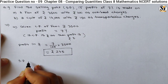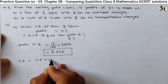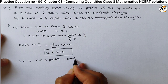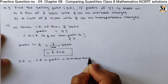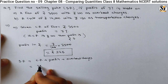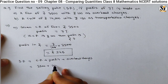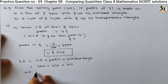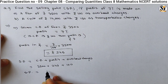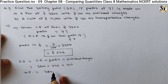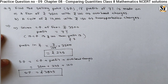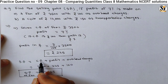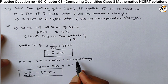We know selling price (SP) is equal to cost price plus profit. As there are overhead charges, we add those too. So: CP is 3500, profit is rupees 245, and overhead charges are rupees 100. Adding all this, we get the selling price of the fan equal to rupees 3845, which includes cost price 3500, profit 245, and overhead charges 100.